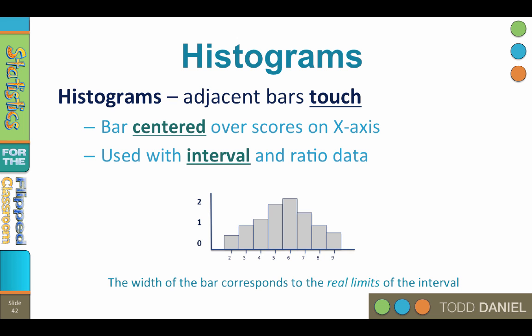Histograms are used with interval and ratio level data — what we will call scale data in SPSS. They are particularly useful when the scale data are in ranges or banded, such as age 25 to 30, 31 to 45, 46 to 50, and so on.